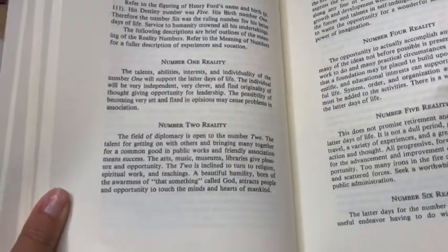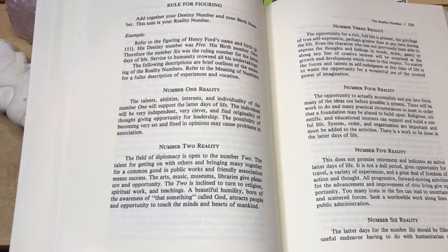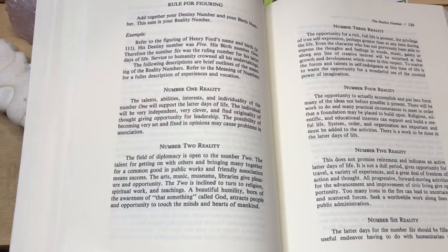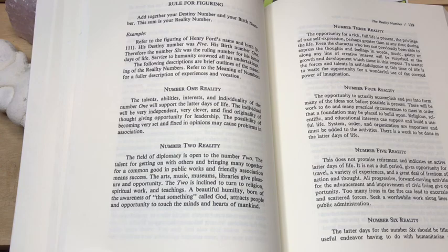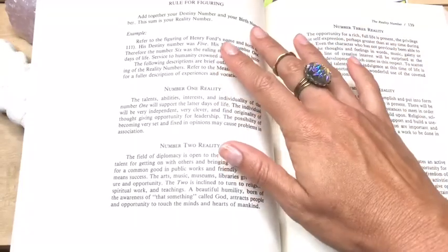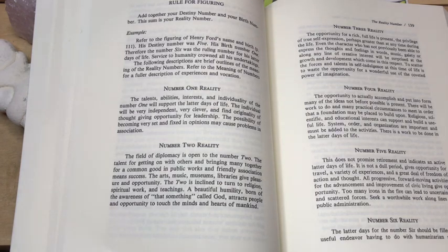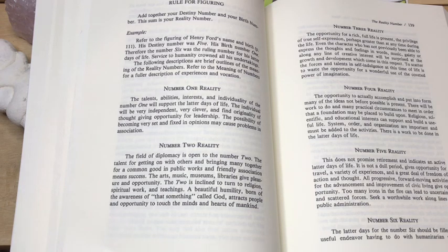So the last part of this video, for our part two, I should say, we're going into the planes of expression. So let's see what Juno Jordan has to say about our reality number. What the overarching theme or want is later on in our years. She gives a lot of really good examples. Like she talks about Henry Ford and she talks about some other people, which at the time, these were people in the news.